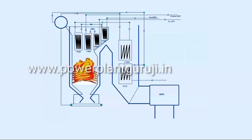Let us take a look at the standard pulverized coal-fired boiler of 500 megawatt or 800 megawatt unit. If I take a look at the temperature profile across the furnace as well as the second pass, the furnace temperature will be in the range of around 1,200 to 1,400 degree centigrade. Then when it reaches the platen superheater region, the temperature goes to around 1,000 degree centigrade, 950 and so.